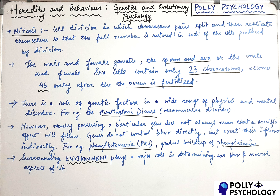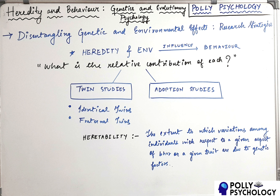Our genes do predispose us towards showing certain patterns of behavior or developing certain physical conditions, but the environment in which we live plays a major role in determining whether and to what extent such tendencies become a reality. The surrounding environment plays a major role in shaping several aspects of our behavior.